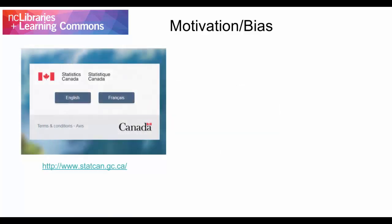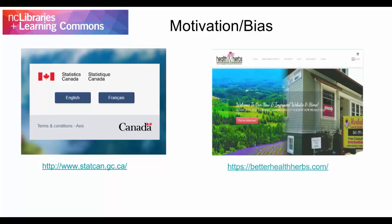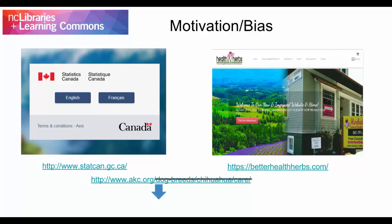Educational or government sites are more likely to provide objective information — for example, Statistics Canada. Commercial sites are usually motivated to make money in some way — for example, BetterHealthHerbs.com. Shortening the URL to find the homepage of a site you're viewing might also give you information about any groups or organizations that this information is aligned with. When you know more about potential motivations or biases associated with the site, think about how these might affect the information that you're viewing.